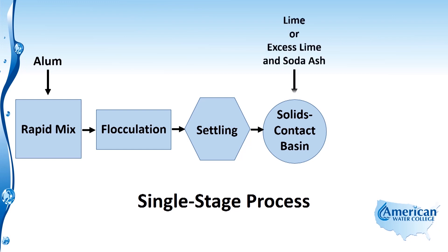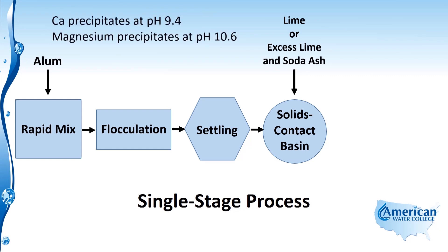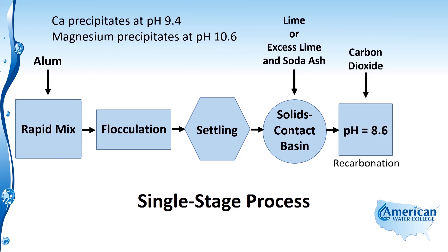From the settling basin, the water flows into a solids contact basin where we add either lime or excess lime and soda ash, depending on the makeup of the water and treatment objectives. Calcium begins to precipitate out at a pH of 9.4, so if hardness is primarily due to calcium, we add lime and raise the pH to 9.4. If magnesium is greater than 40 mg/L, we use excess lime and soda ash to raise the pH to 10.6.